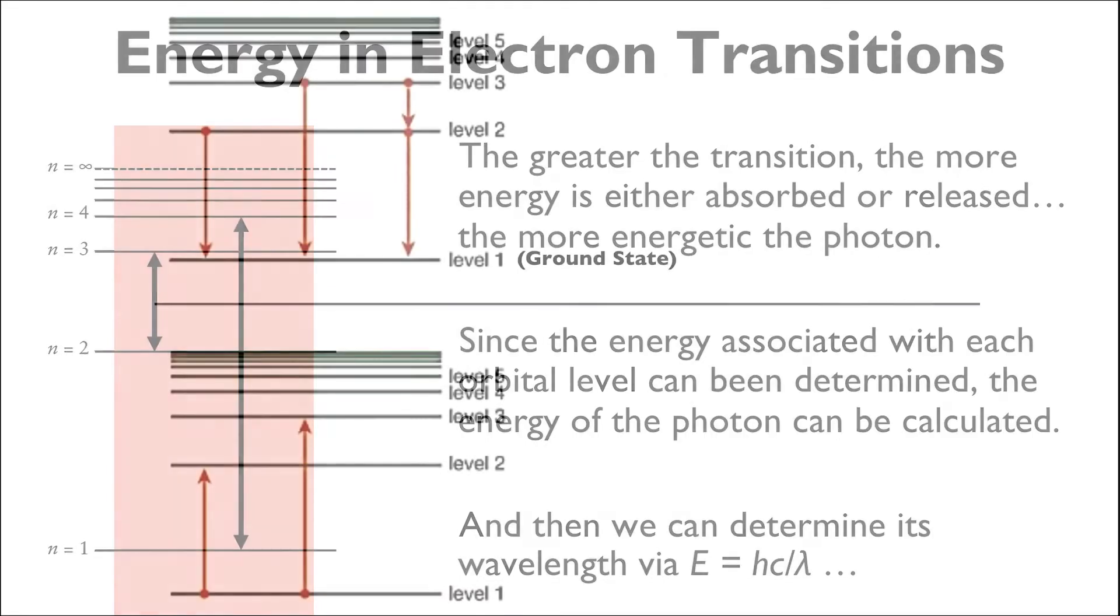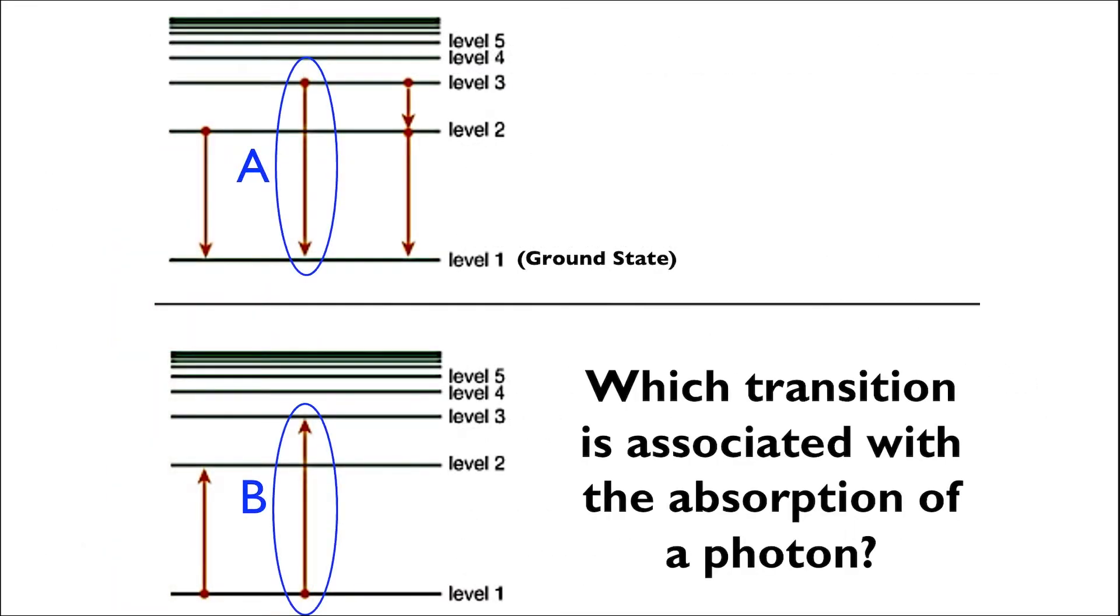So let's review. Which of these transitions, A or B, is associated with the absorption of a photon? Assume level one is the ground state. The answer is B, since we're looking for the arrow that is pointing away from the ground state, away from the nucleus.